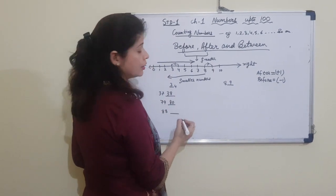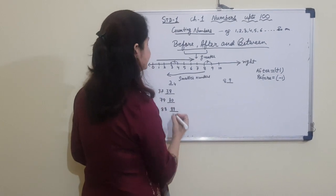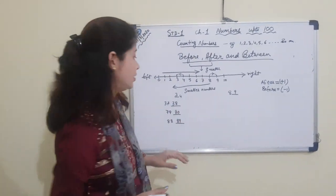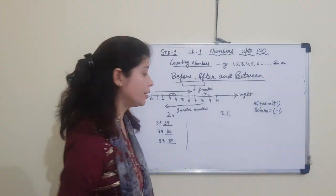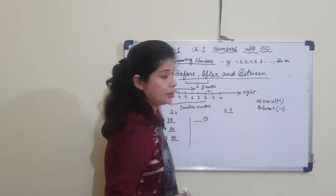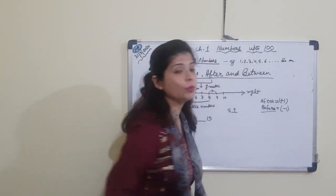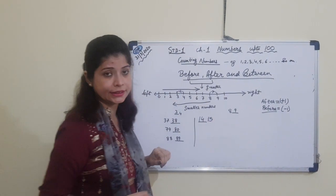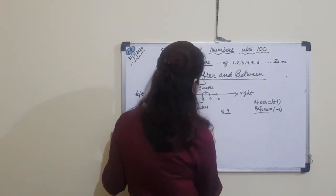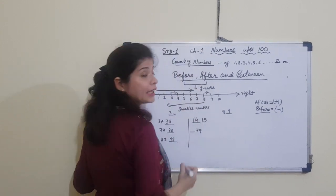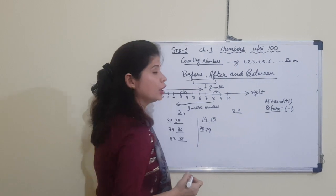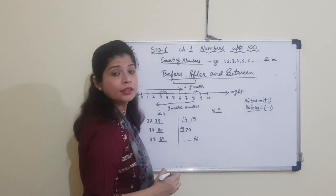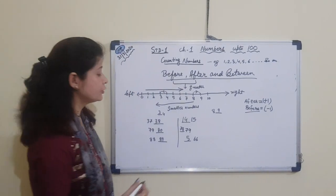After 88: 8 plus 1 is 9, so it becomes 89. Always remember: whenever asked about 'after', add 1 to the given number. For before: suppose the number is 15 — 15 minus 1, 5 minus 1 is 4 and 1 stays, giving 14. Before 79: 9 minus 1 is 8 and 7 stays, giving 78. Before 66: 6 minus 1 is 5 and 6 stays, giving 65.